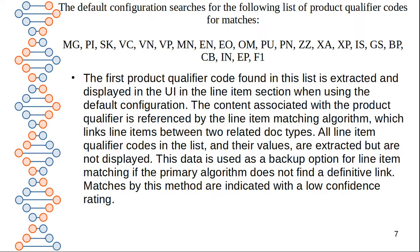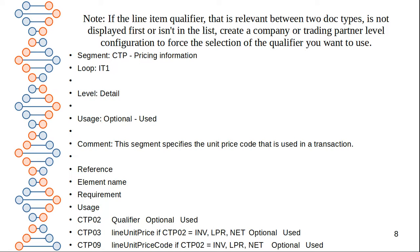The first product qualifier code found in the list is extracted and displayed in the UI in the line item section. When using the default configuration, the content associated with the product qualifier is referenced by the line item matching algorithm, which links line items between two related document types. All line item qualifier codes in the list and their values are extracted but are not displayed. This data is used as a backup option for line item matching if the primary algorithm does not find a definitive link. Matches by this method are indicated with a low confidence rating.